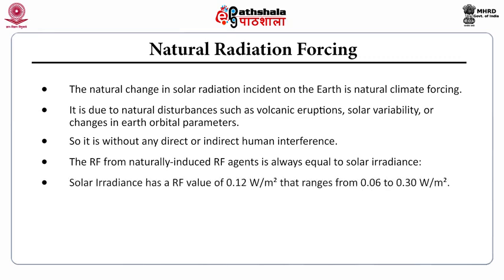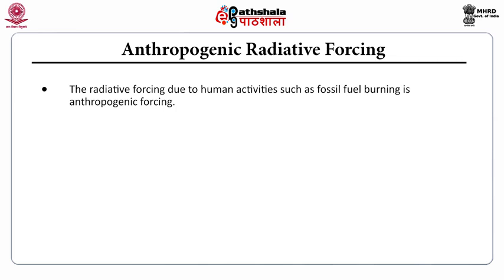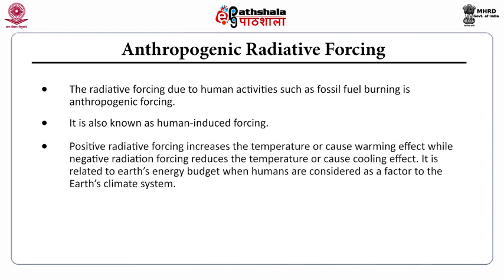Solar irradiance has a radiative forcing value of 0.12 Watt per meter square, ranging from 0.06 to 0.3 Watt per meter square. Volcanic aerosols in the atmosphere are currently negligible in their contribution to natural radiative forcing. The second type is anthropogenic radiative forcing, which is due to human activities such as fossil fuel burning, also known as human-induced forcing. Positive radiative forcing increases the temperature or causes a warming effect, while negative radiative forcing reduces the temperature or causes a cooling effect.